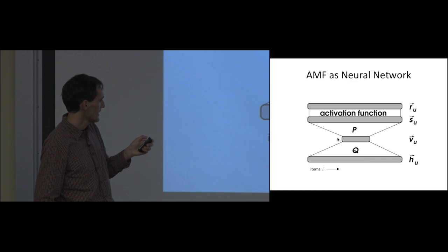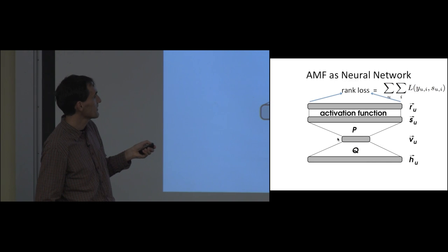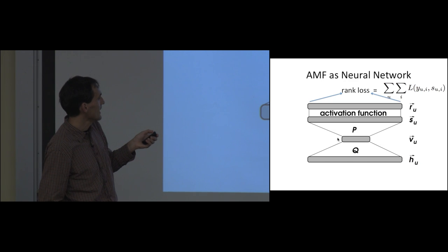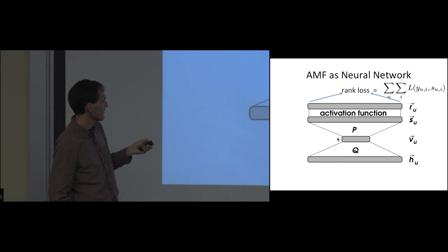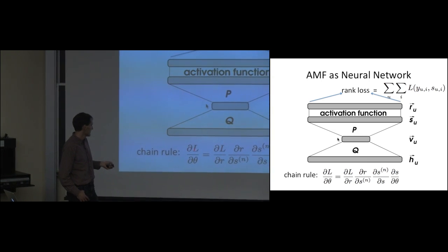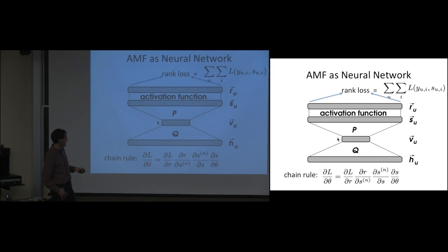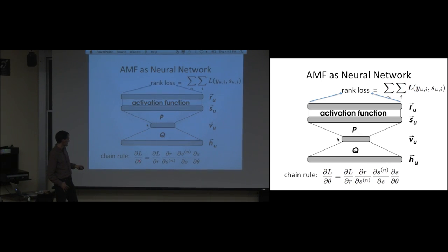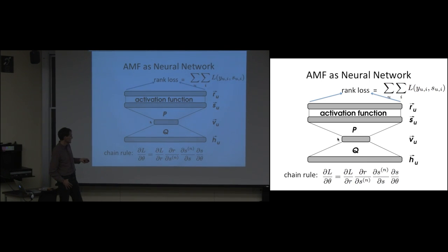With the ranks, we feed into a rank loss function. To optimize with stochastic gradient descent, we need partial derivatives of the rank loss with respect to model parameters theta (entries in P or Q). Using the chain rule: derivative of the loss with respect to rank, times derivative of rank with respect to normalized score, times derivative of normalized score with respect to score, times derivative of score with respect to parameters. The last two steps are straightforward.